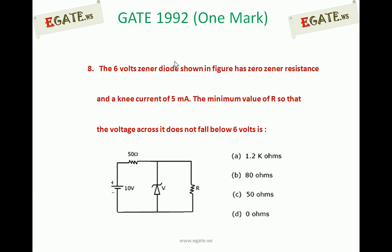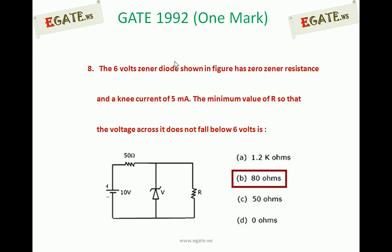We need to calculate the minimum value of R such that it is going to be acting as a good voltage regulator, so that output voltage will not fall below 6V. The correct option for this is 80Ω, option B. We'll see the details now.